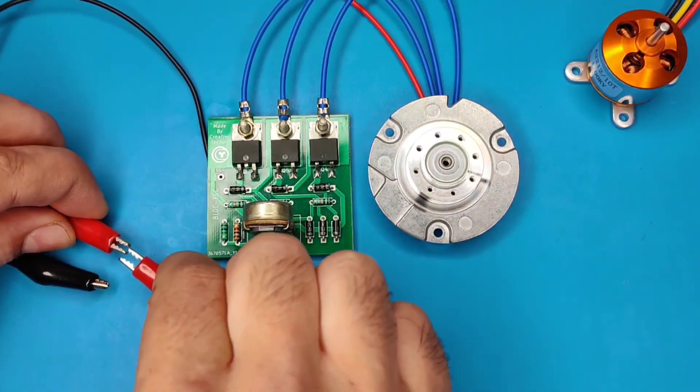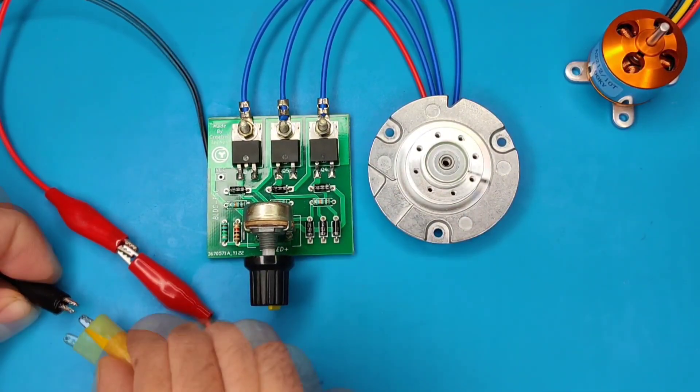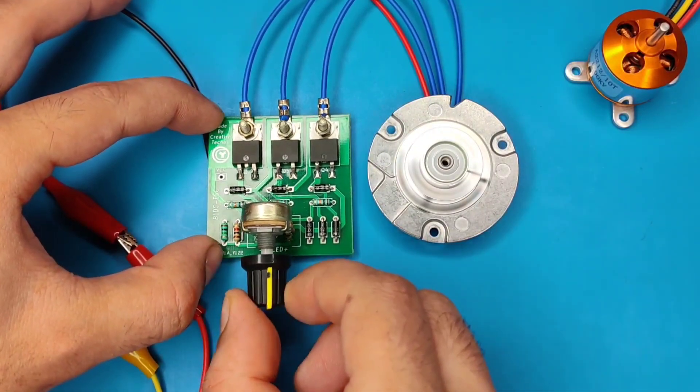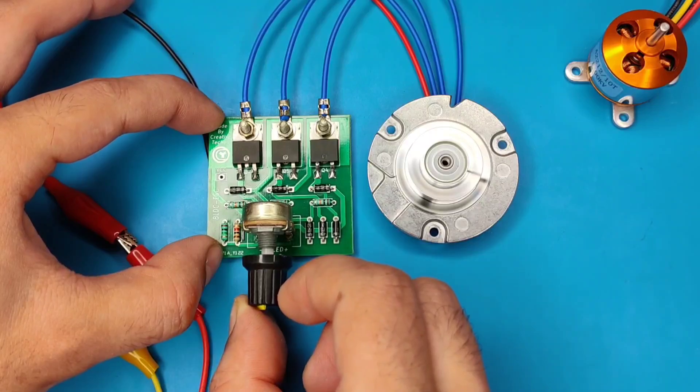Connect 5 to 9 volts DC input and here you go. Control speed with this potentiometer and it will work perfectly.